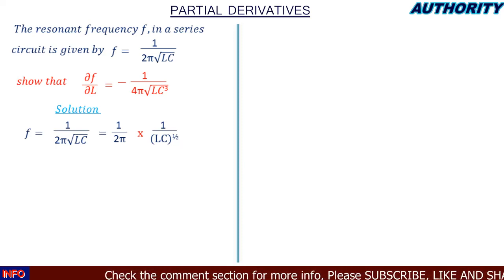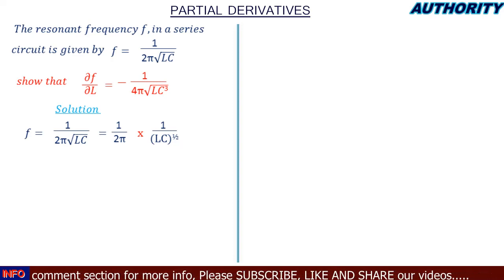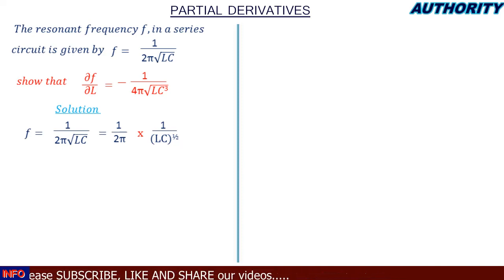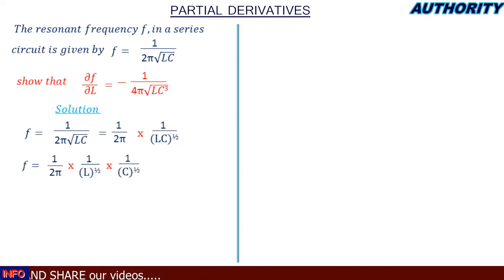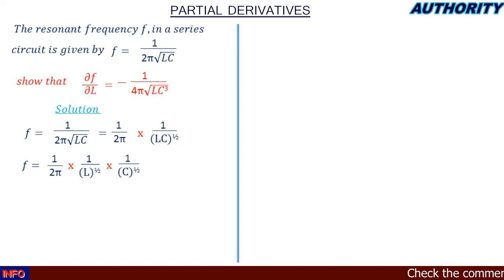Now LC is in a bracket raised to the power of 1/2, so we distribute the power to the contents of the bracket. This gives us (1 / 2π) × (1 / L^(1/2)) × (1 / C^(1/2)).